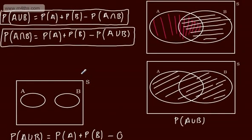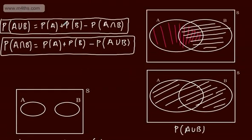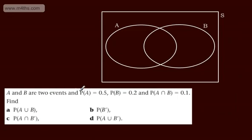We'll come back to that later on. It's important to stress how this can be used alongside Venn diagrams. Sometimes I like to use the addition formula, sometimes Venn diagrams, and often I like to combine the two. Let's look at a question: A and B are two events. The probability of A is 0.5, probability of B is 0.2, and the probability of A intersection B is 0.1. Find: A) probability of A union B, B) probability of the complement of B, C) probability of A intersection not-B, and D) probability of A union not-B.